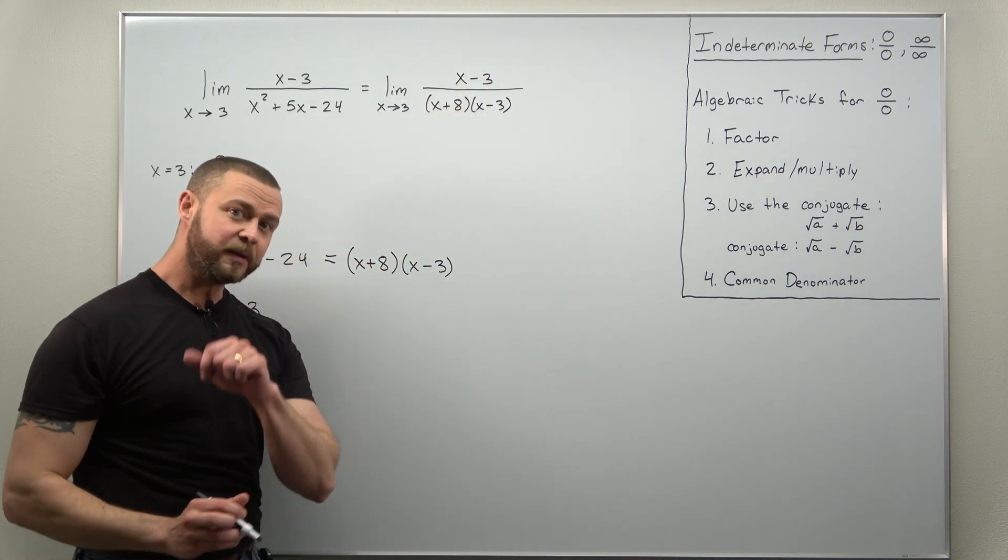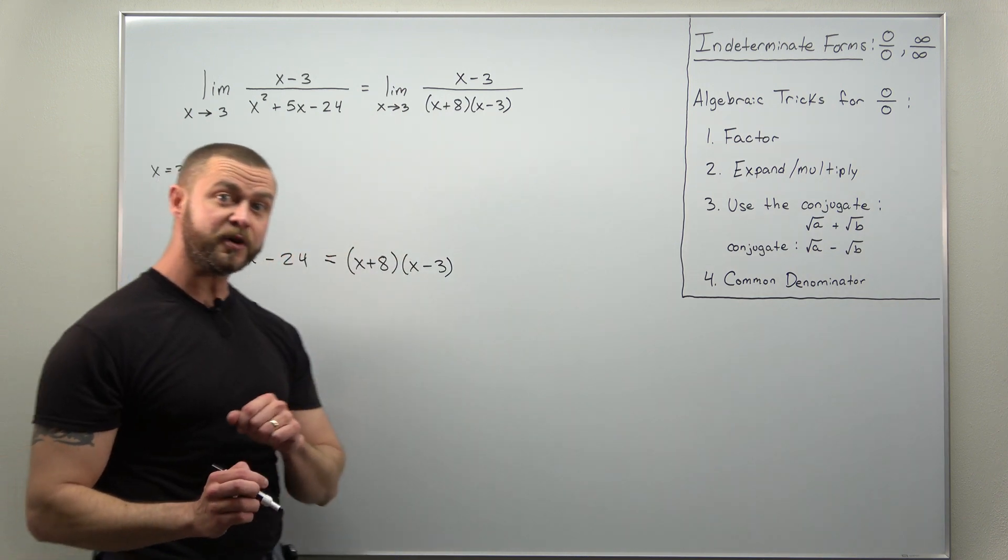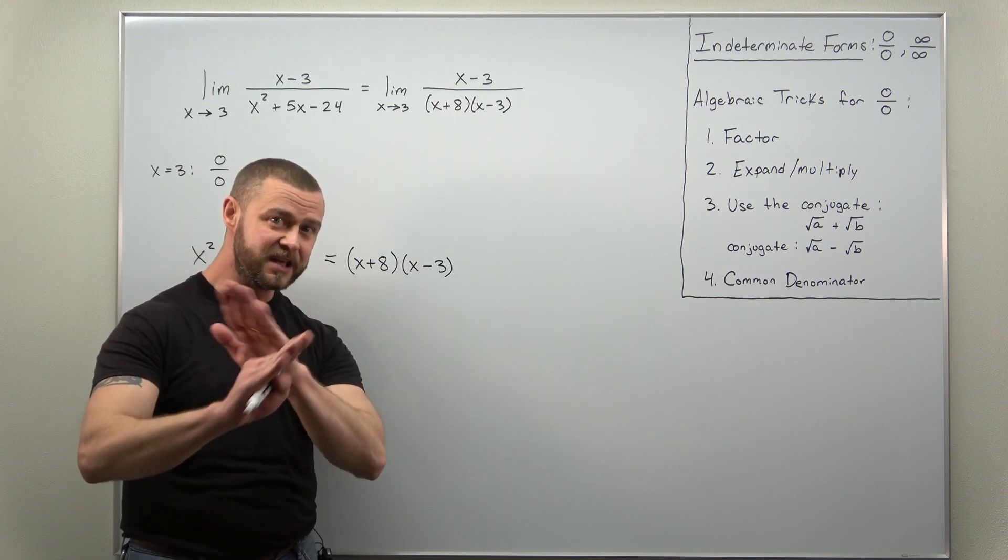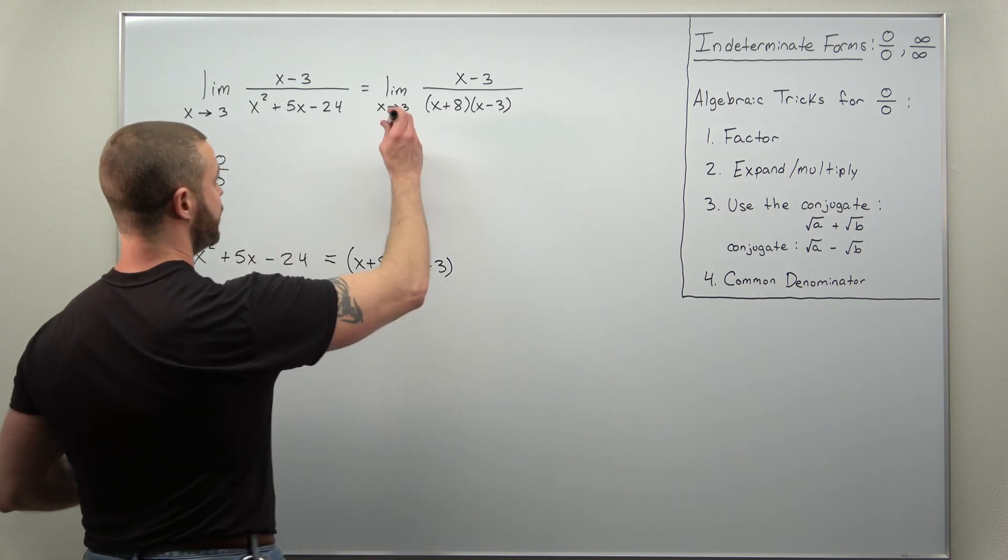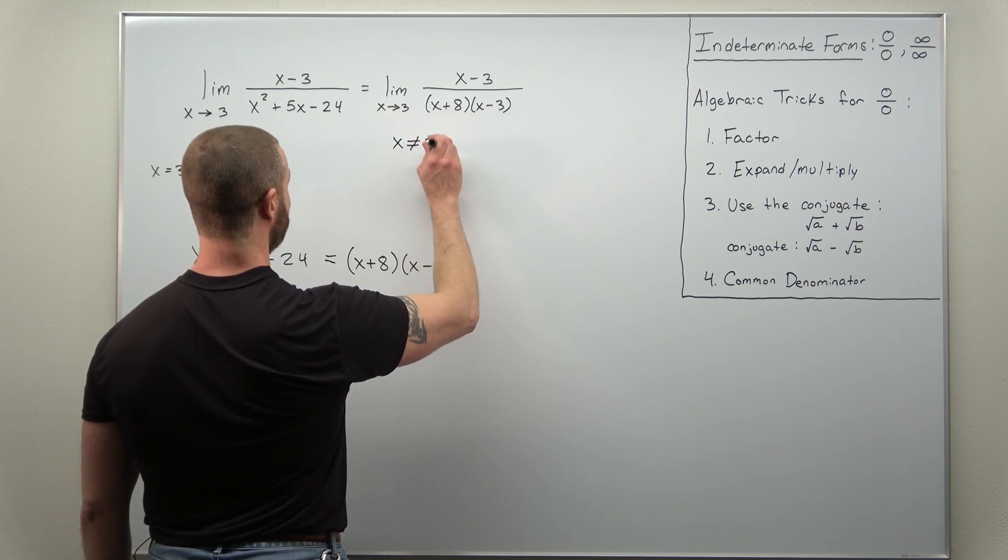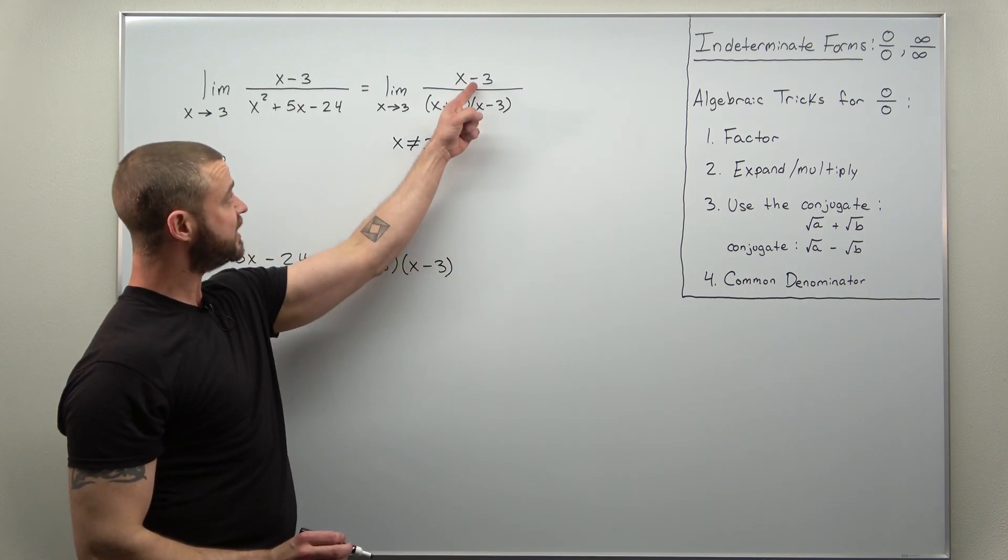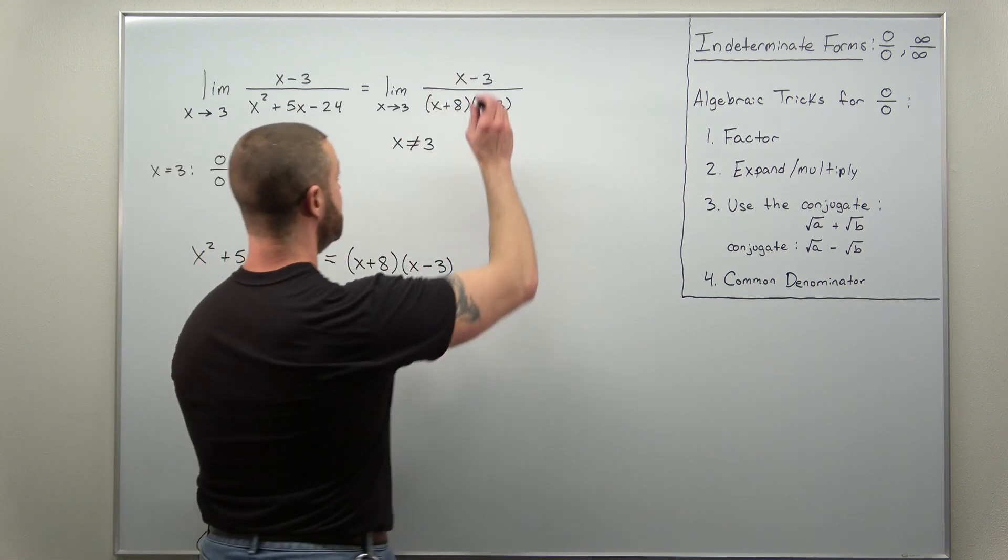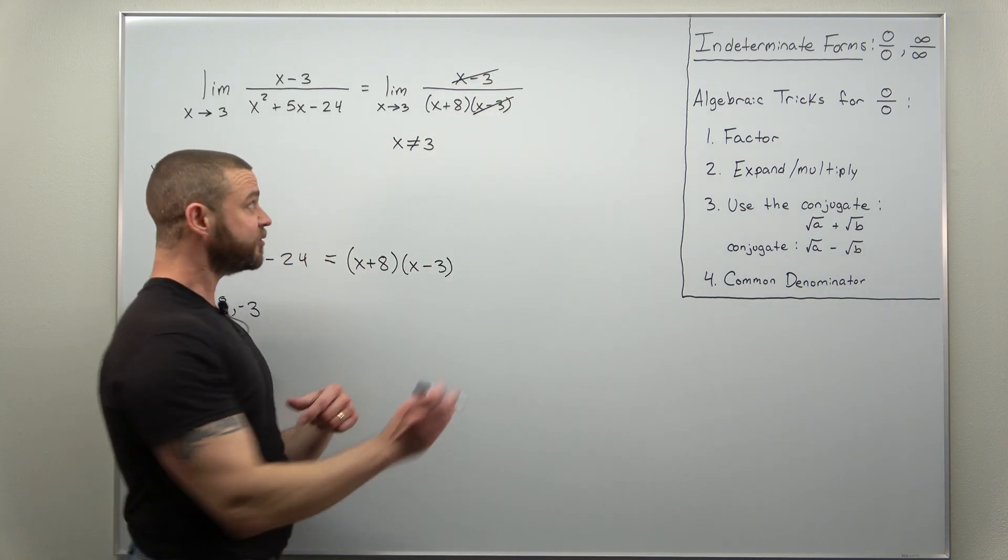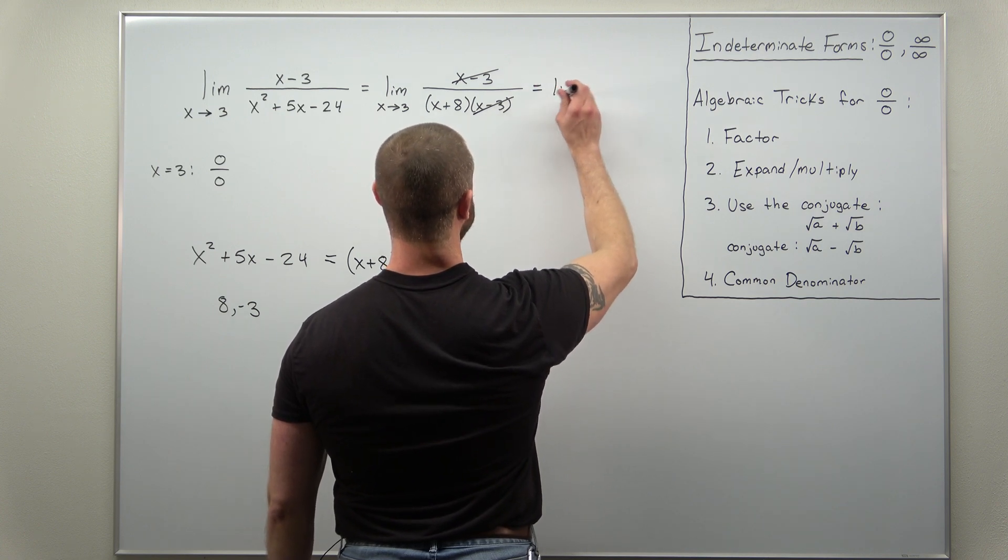And this is where we need to point something out. Remember with a limit here x is approaching three, we are only letting x approach three, x never equals three. So through this whole process of evaluating a limit as x approaches three, x does not equal three, which means x minus three is not zero. So we can cancel those out and we're left with a very simple limit to evaluate now.